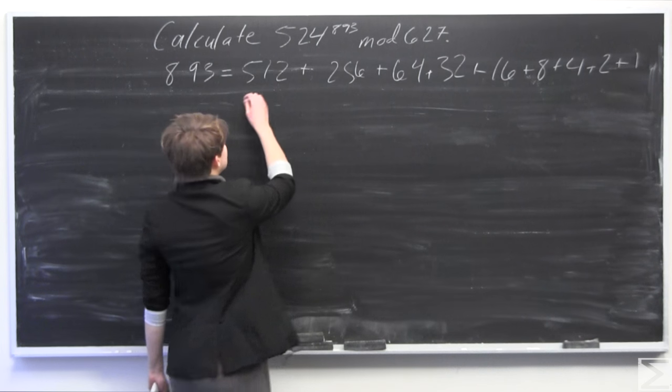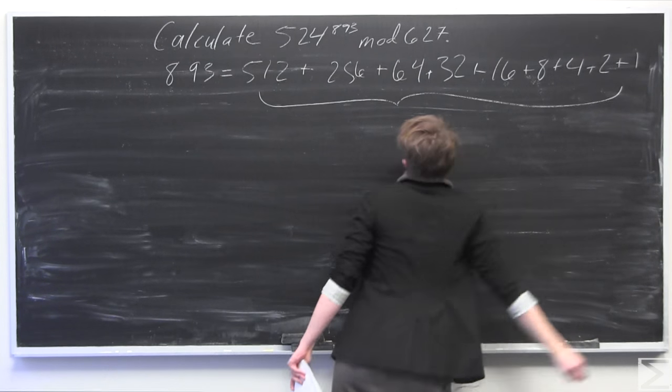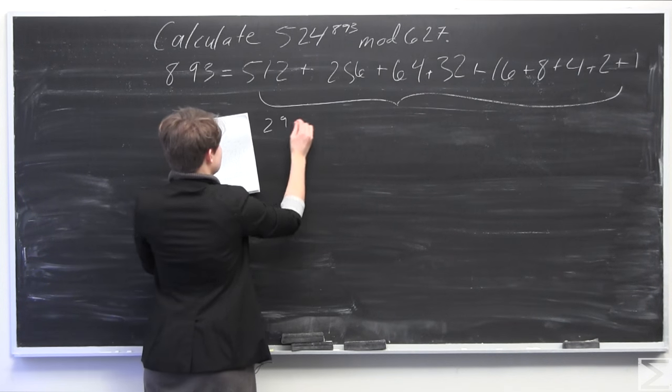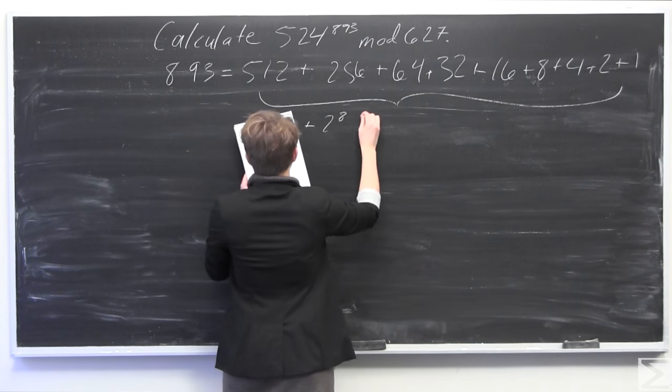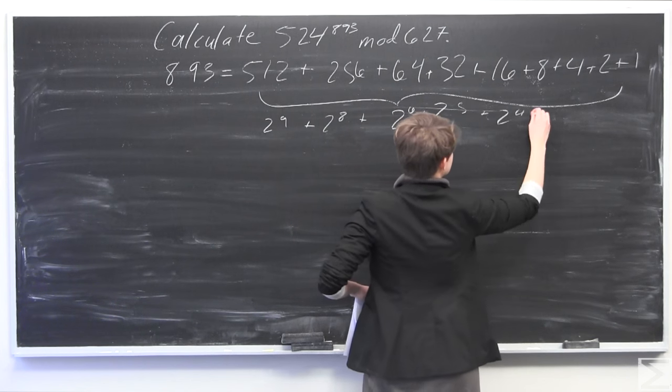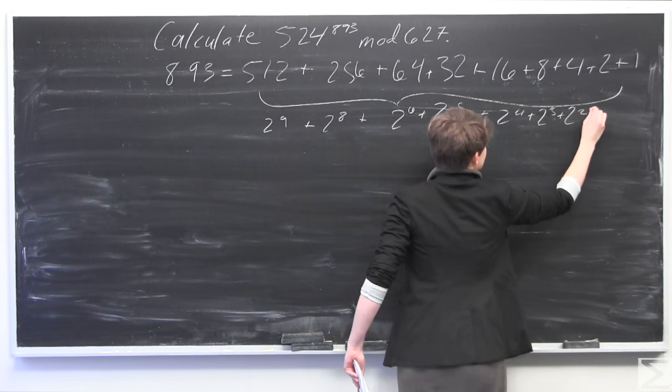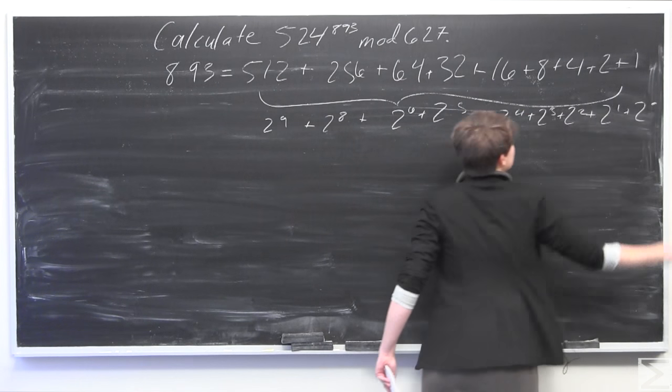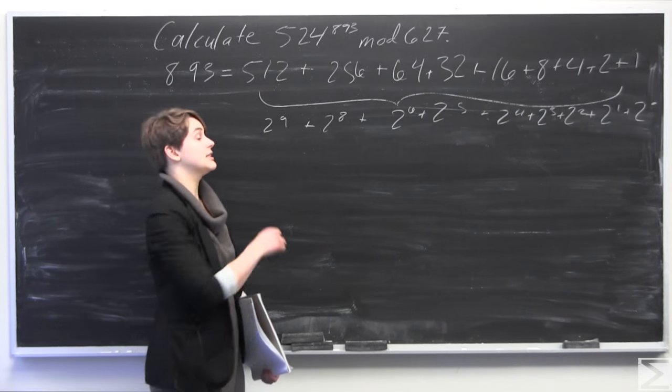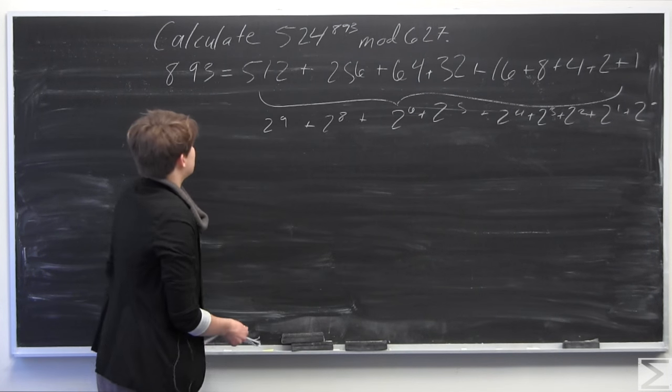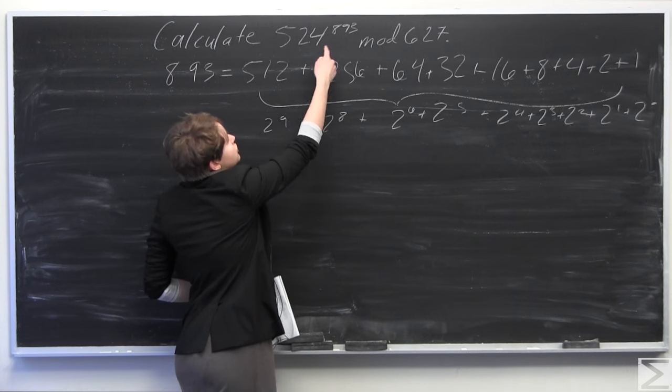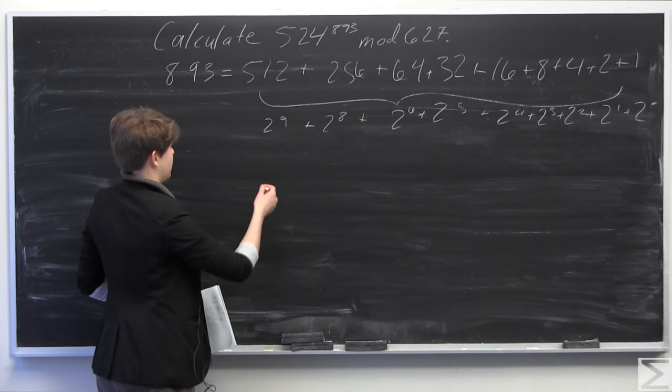So now, as you can see here, all of these numbers are some power of 2. So we have here 2 to the 9th, 2 to the 8th, 2 to the 6th, 2 to the 5th, 2 to the 4th, 2 to the 3rd, 2 squared, 2 to the 1, and then 2 to the 0. So we have just written our exponent, 893, as a sum of powers of 2. This is going to help us in computing, in a series of steps, this 524 raised to that power.